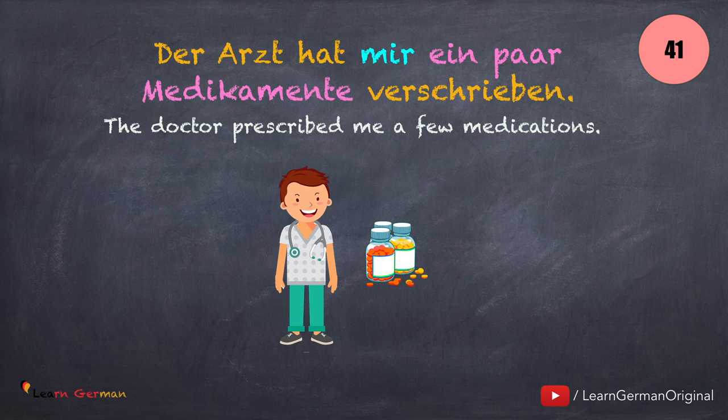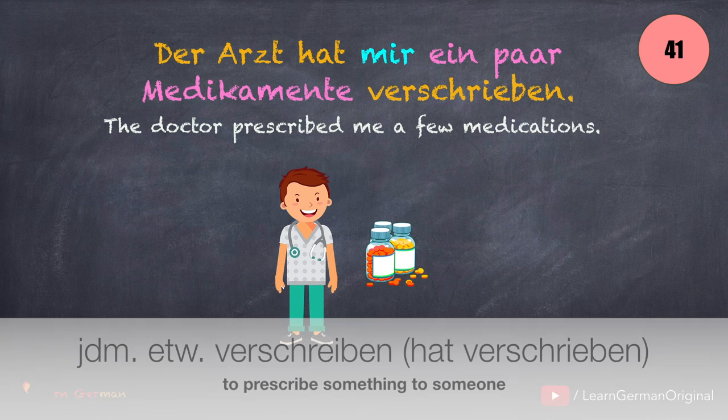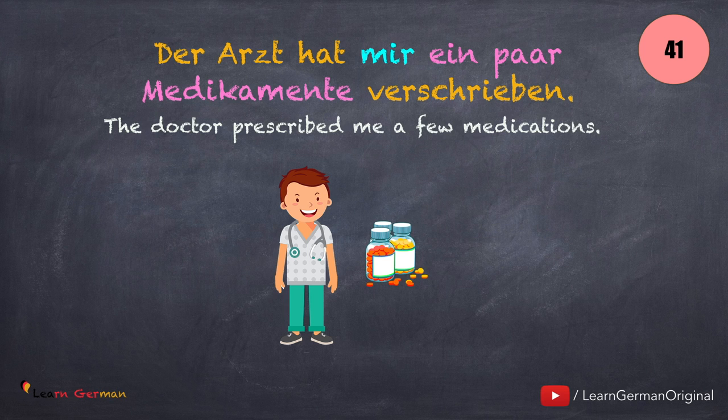Now let's look at the next sentence: Der Arzt hat mir ein paar Medikamente verschrieben. The verb here is jemandem etwas verschreiben. Verschrieben is the Partizip-Perfekt for verschreiben.